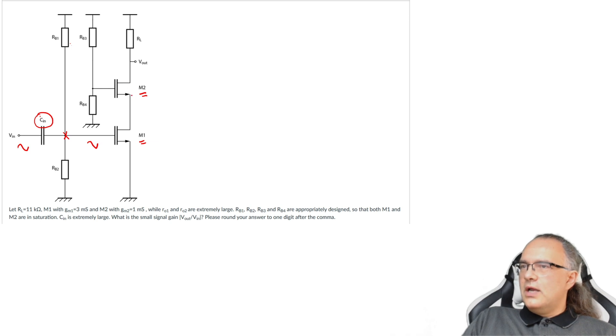So M2 is a cascode. It buffers the amplifying transistor M1 from the output Vout and increases very much the resistance seen from Vout to the ground. So the resistance is increased by a factor of GM2·Rout2 about.